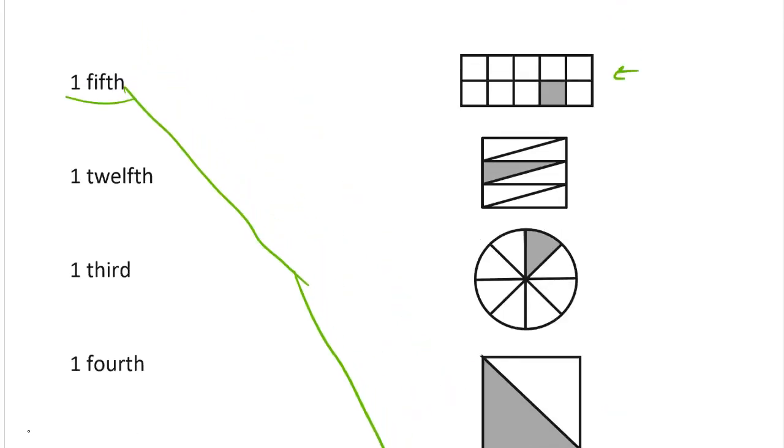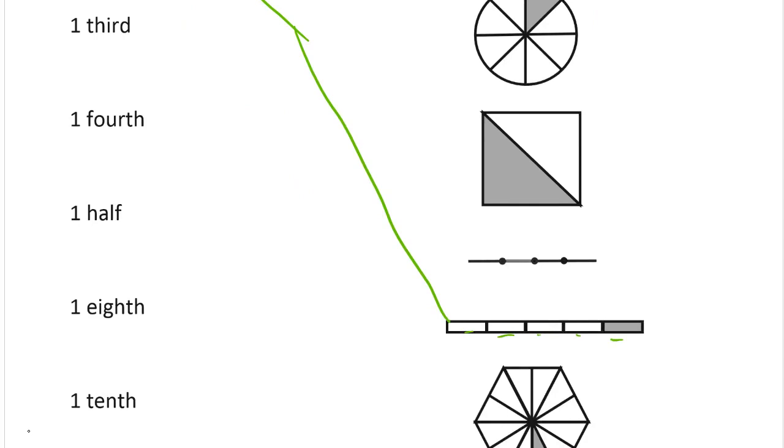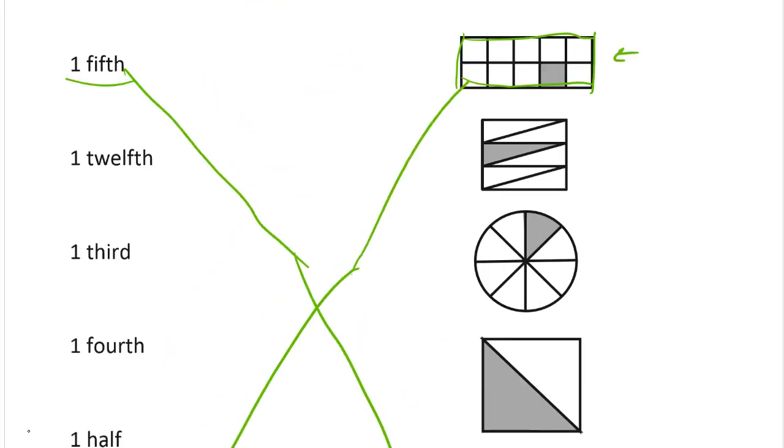Now one twelfth. Now this first one here is a ten frame. So those are tenths with one shaded. Let's just get that one out of the way. Maybe it might be easier to do it that way. So here's the tenth. That's going to take the one all the way up at the top here. Done.